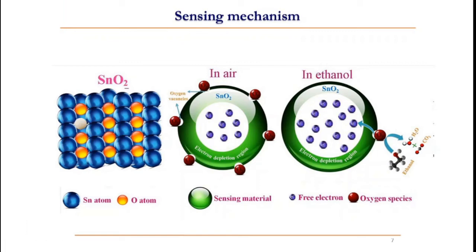SnO2 is an N-type semiconductor. When this metal oxide semiconductor is placed in air, the oxygen molecules get absorbed on the surface of the metal oxide semiconductor by accepting electrons from it. This results in the depletion region in the metal oxide semiconductor. Hence, the resistance increases.